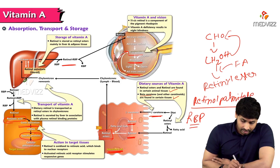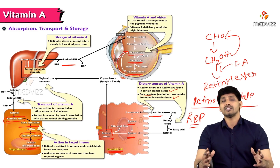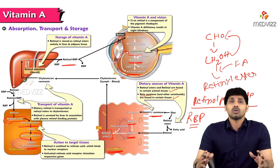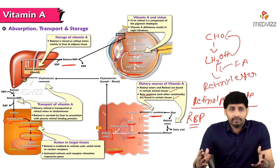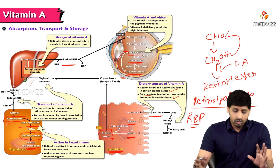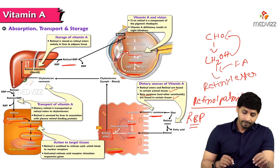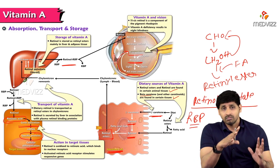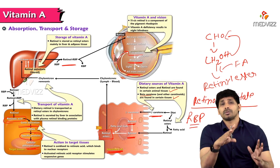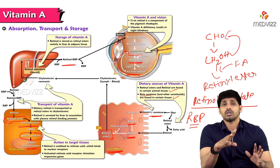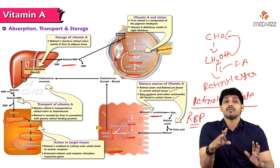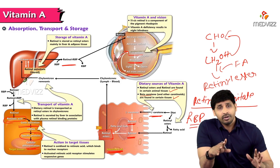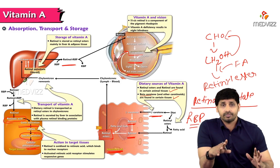As these proteins are synthesized, there is cell growth and functioning — this is cellular differentiation. This covers the typical absorption, transport, storage, and function of vitamin A.